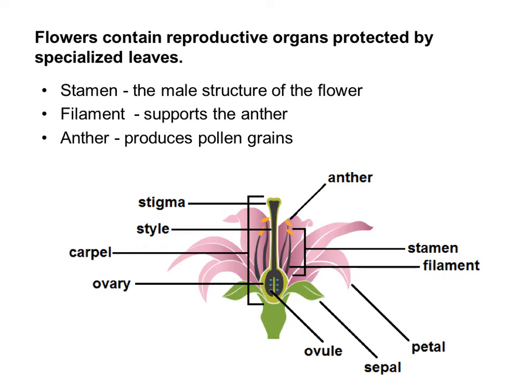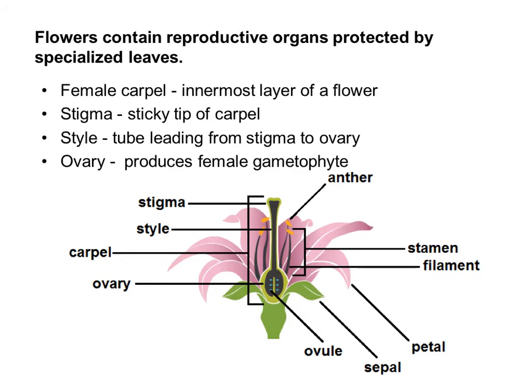There are several stamens per flower, because there's always more of a need for male gametes than female gametes — pollen goes randomly through the air or is carried by a pollinator, so you can't guarantee where it lands, which is why there are more stamens. The female reproductive part of a flower is known as the carpel, also sometimes called the pistil, and it is the innermost layer of the flower, with just one present.